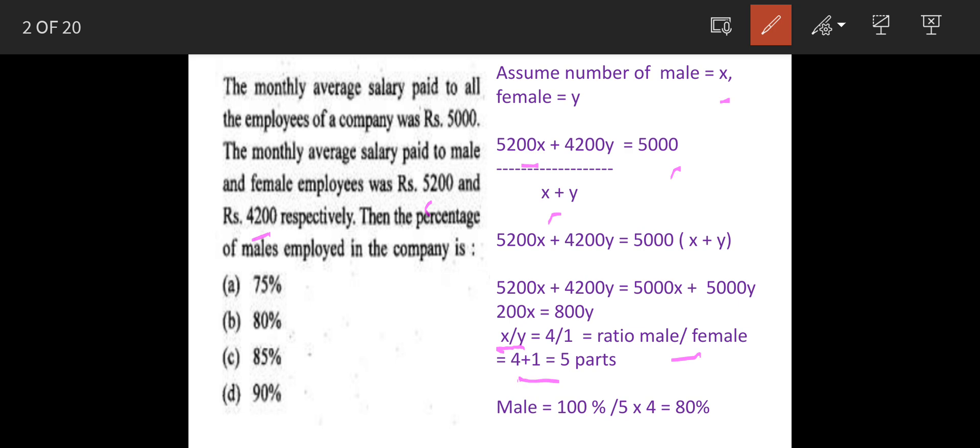So how many males are there? 100% strength divided by 5 gives 1 part, and males are 4 parts, so 4 times that equals 80%. So our answer is option B, 80%.